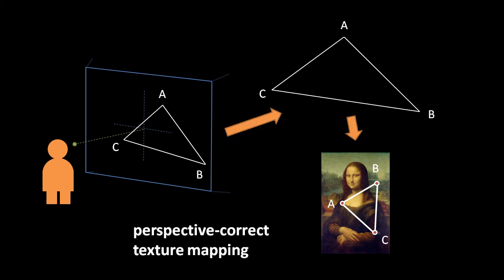To get a perspective-correct texture mapping, we must first use a projection transform to map coordinates from the view plane triangle to the 3D triangle, and then use a straight linear transform to map coordinates of the 3D triangle to the texture triangle.